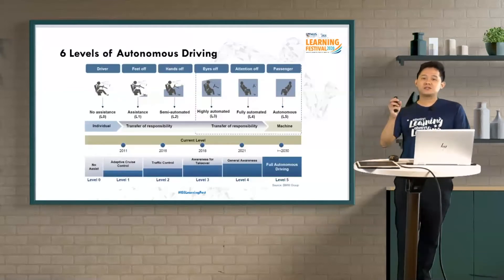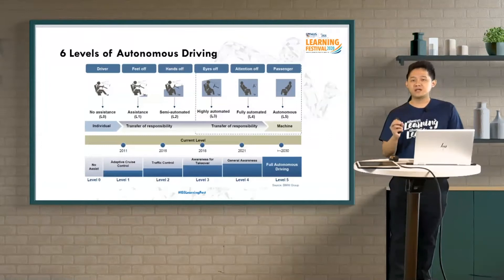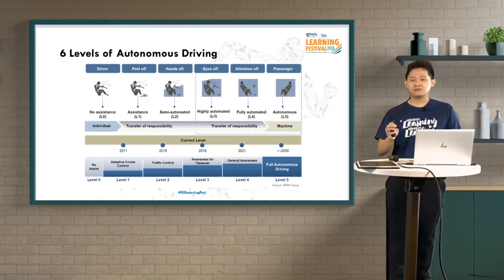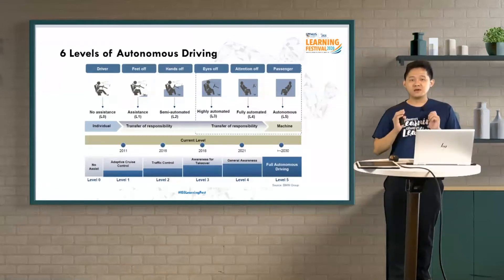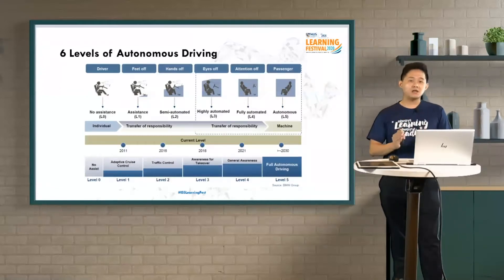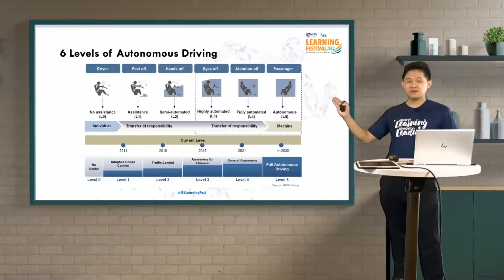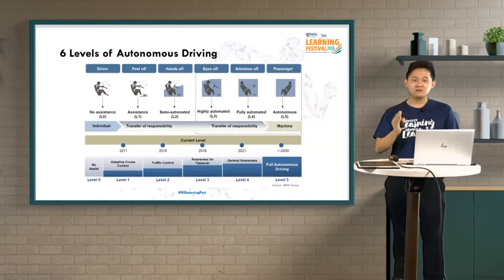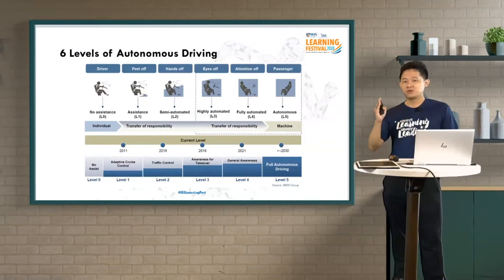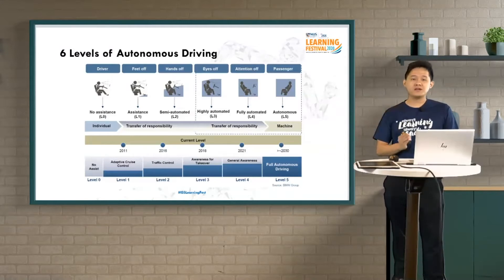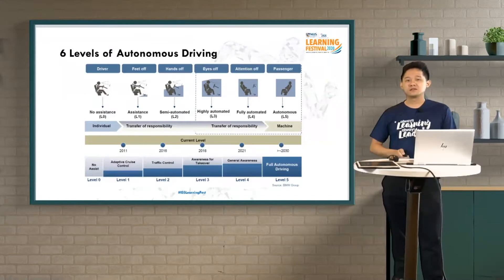Zooming in on autonomous driving — self-driving cars — most of us have not sat in a self-driving car, but I have an example video to show you later. For autonomous cars, we can divide them into different levels of autonomy. The least autonomous is manual driving, which is level zero, ranging to level five, which has very minimal human intervention.